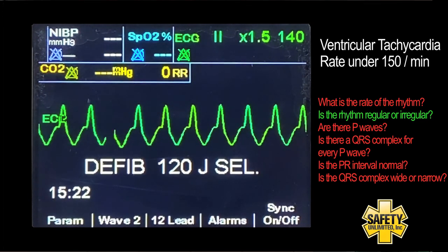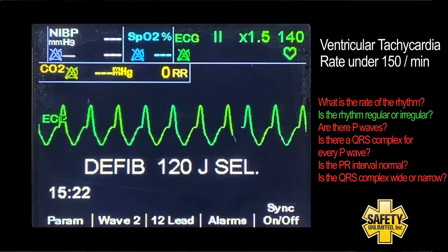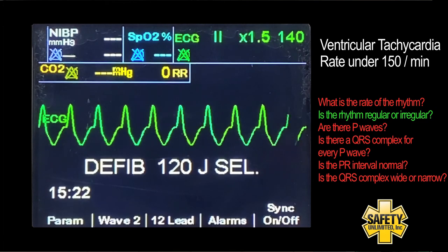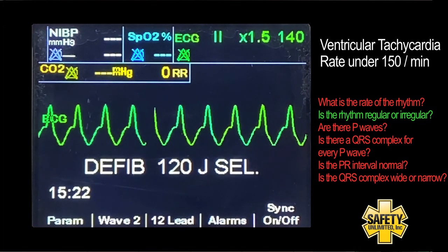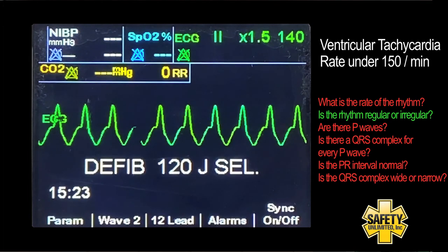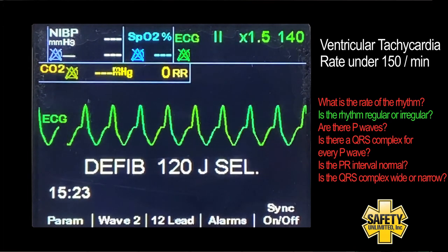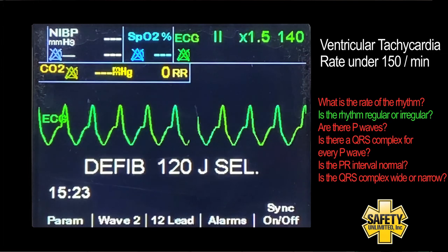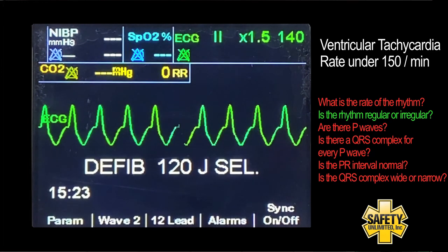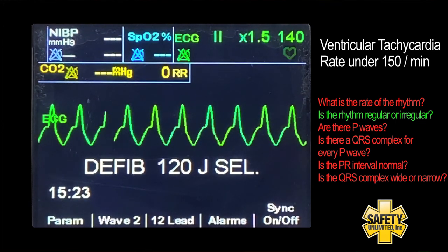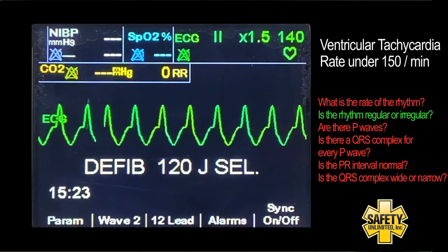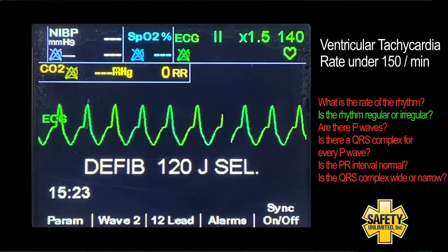On the screen, you can see another example of ventricular tachycardia, or VTAC. Ventricular tachycardia is generally a very rapid rhythm; however, it can be relatively slow — for instance, this VTAC has a rate of around 140. Continuing with our analysis, we'll see that this is a regular rhythm, but there are no P waves, and therefore we cannot correlate a QRS complex for every P wave. Likewise, there is no PR interval to measure. Finally, VTAC will always show wide QRS complexes.